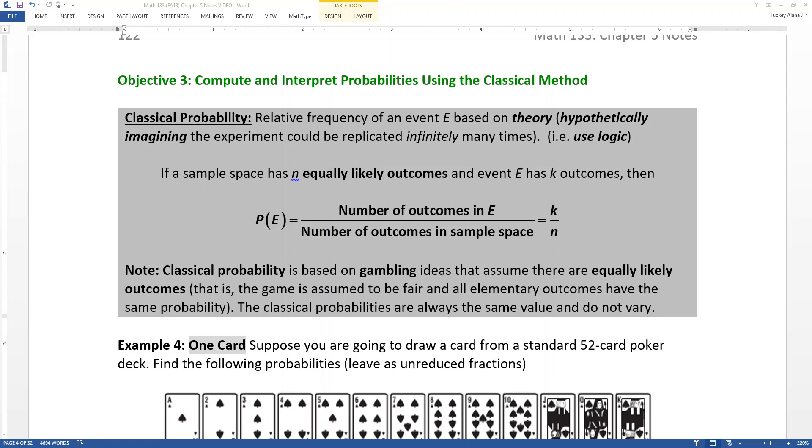Now classical probability is when you find, and again, our book is using a frequentist definition, which is fine, so it's the relative frequency of an event based on theory. You just hypothetically imagine the experiment would be replicated infinitely many times, and you just imagine what that probability would be using logic. Now it seems really tricky, and it actually can get tricky. This can start off very simple, but can get much harder than empirical probabilities quite quickly. You can spend semesters after semester just playing around with classical probabilities.